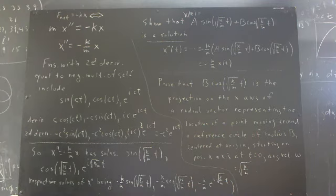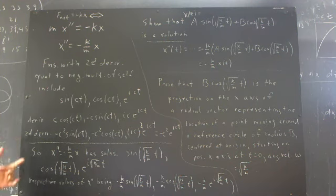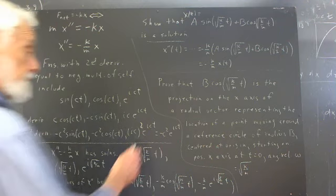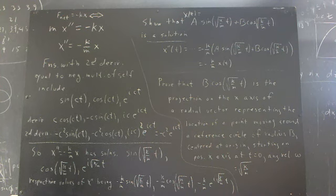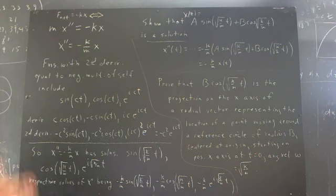So, these are three functions that have second derivatives equal to negative multiples of themselves. Negative constant multiples, if you want to be very precise about your terminology. And that's a good idea to be that precise. In any case, now,